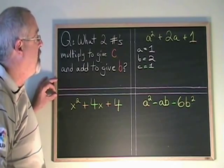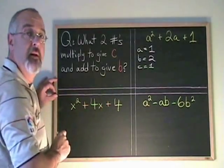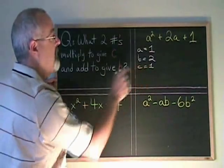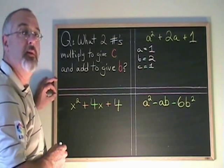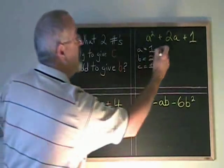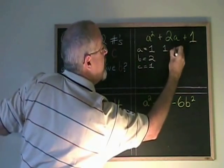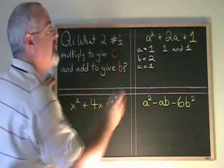Then I ask myself the question: what two numbers multiply to give c and add to give b? In this situation, c is equal to 1 and b is equal to 2. So I am asking, what two numbers multiply to give 1 and add to give 2? Those numbers are 1 and 1, and in this case they're both positive.